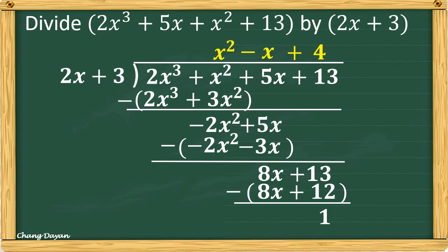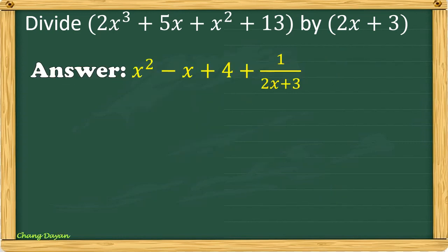Our remainder here is 1. The answer when there is a remainder is composed of the quotient plus the remainder over the divisor. So our answer here is x squared minus x plus 4 plus 1 over (2x plus 3).